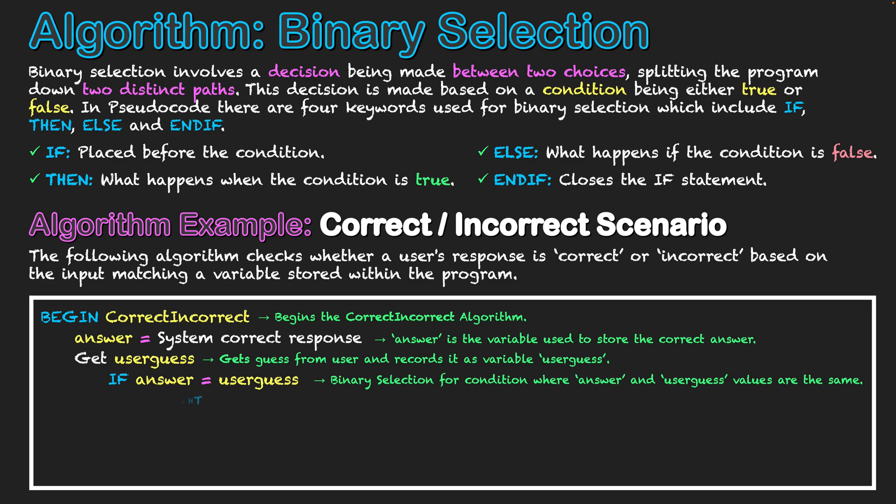In the case that it is true, we write after our then statement, which is what happens when the condition is true. We're going to display correct. If answer and user guess equal the same value, they're the same actual text or the same number written in by the user and matching what's on the system, correct will be displayed on screen.